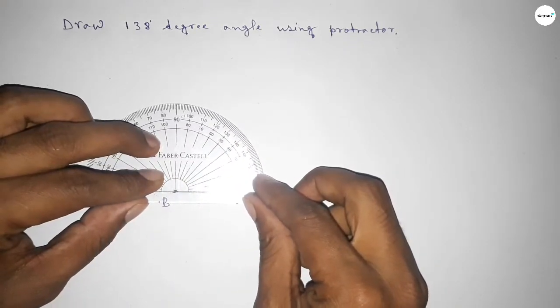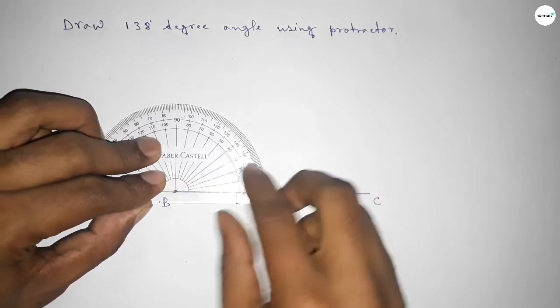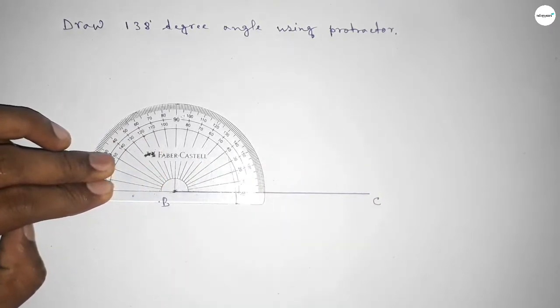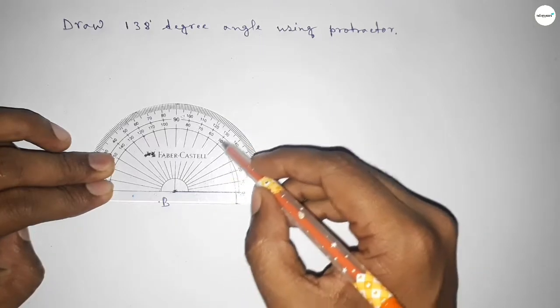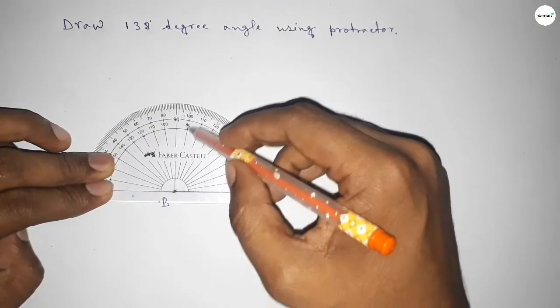Then counting the angles, so this is starting angle: 0, 10, 20, 30, 40, 50, 60, 70, 80...